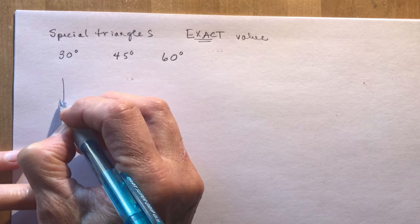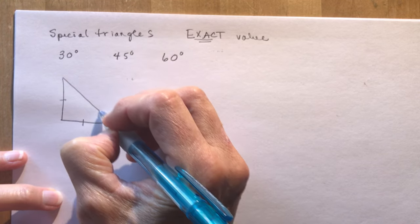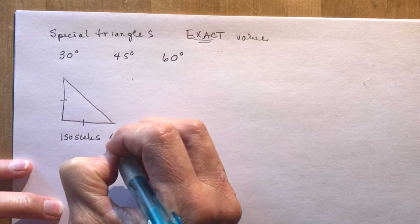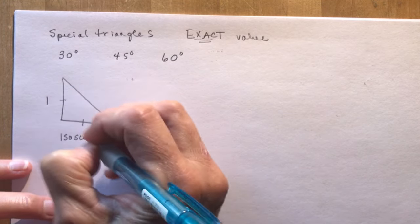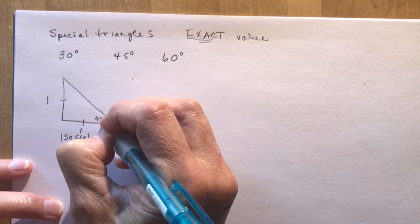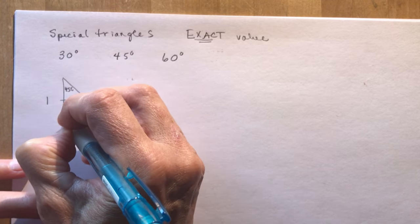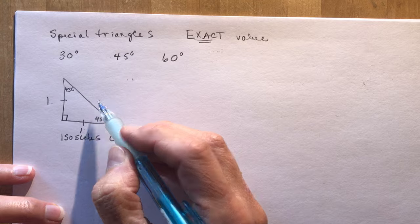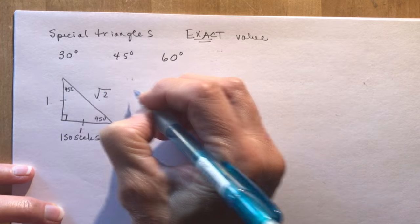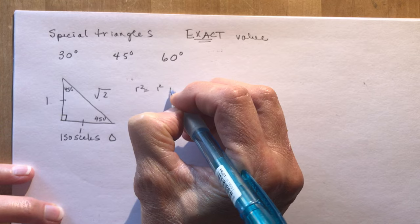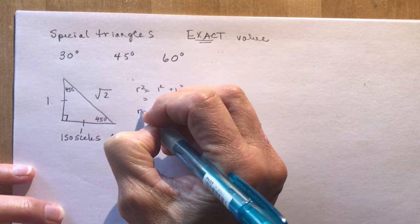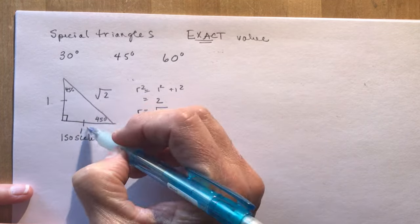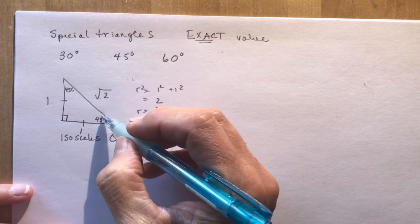The first special triangle is an isosceles triangle — two sides the same. We call them both 1, and the angles are 45°, 45°, and 90°. If both legs are 1, the hypotenuse is √2 because r² = 1² + 1² = 2, so r = √2. So your 45° triangle has sides 1, 1, √2.